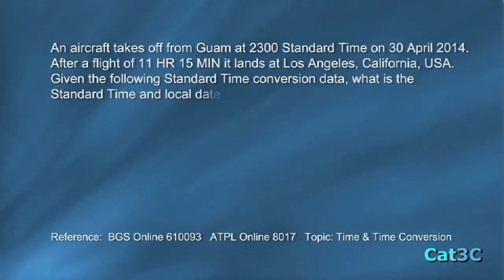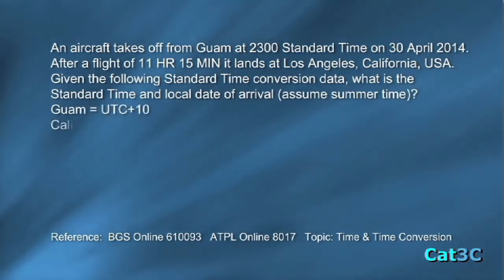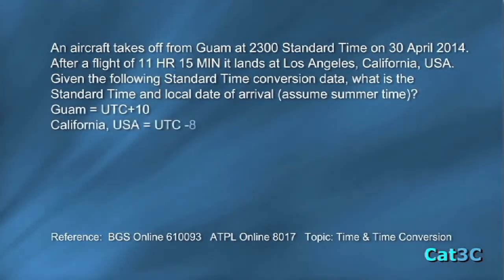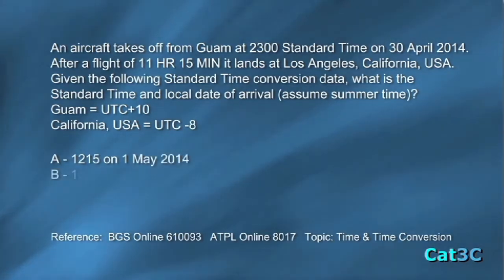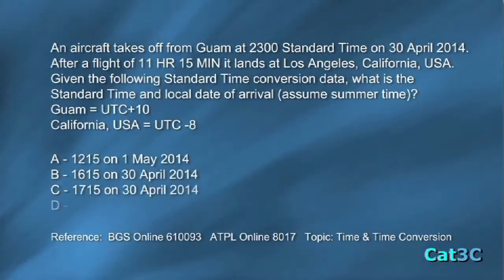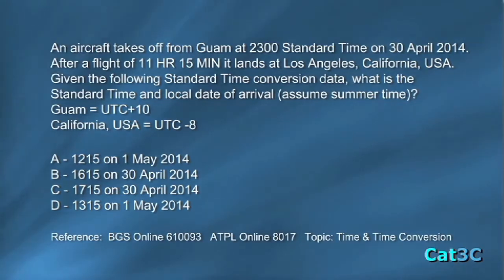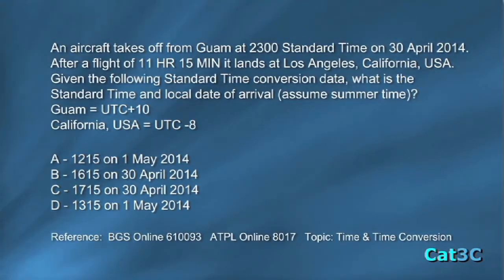The standard time conversions are: Guam equals UTC plus 10, California USA equals UTC minus 8. The optional answers are: A, 12:15 on the 1st of May 2014; B, 16:15 on the 30th of April 2014; C, 17:15 on the 30th of April 2014; and D, 13:15 on the 1st of May 2014.